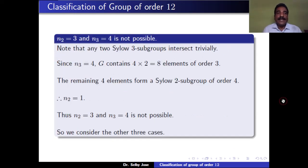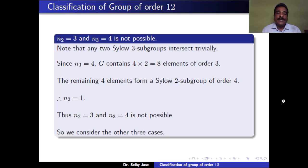We show that the case N2 = 3 and N3 = 4 is not possible. If N2 = 3 and N3 = 4, there are three Sylow 2-subgroups and four Sylow 3-subgroups. Each Sylow 3-subgroup has 3 elements, and any two Sylow 3-subgroups intersect trivially, so their intersection contains only the identity. The other two elements of each Sylow 3-subgroup have order 3. In all, there are 8 elements of order 3 in G.